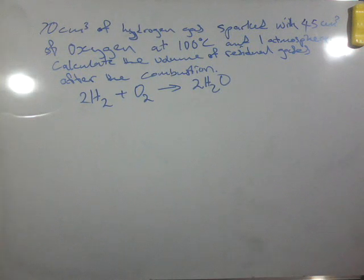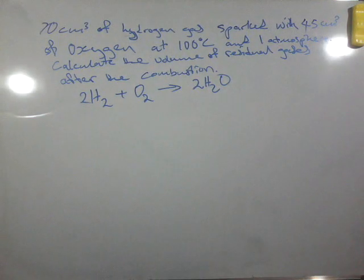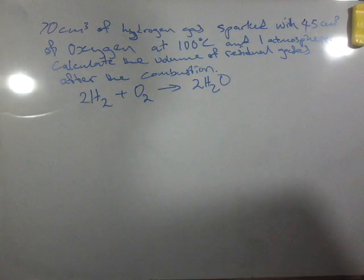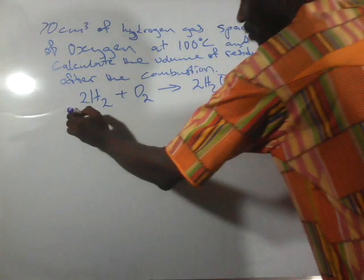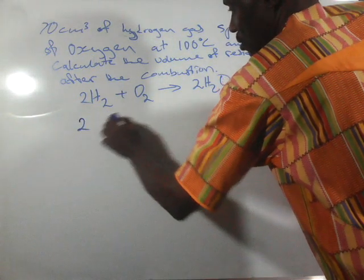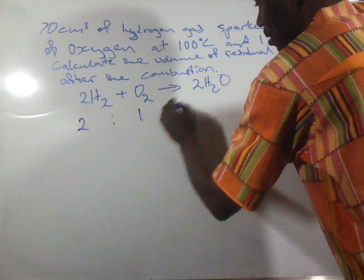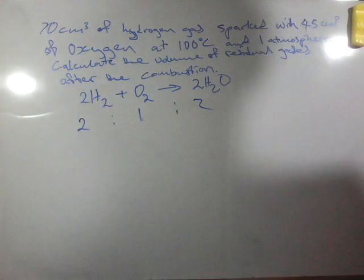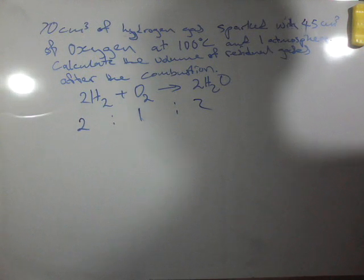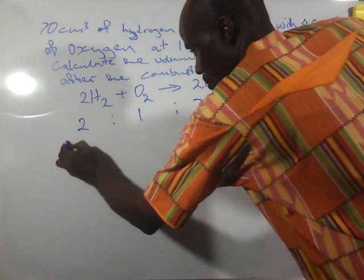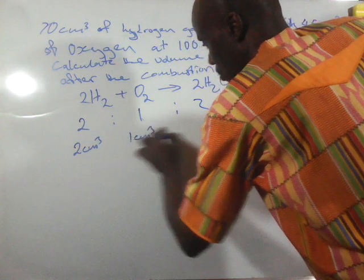Now what we need to look at is Gay-Lussac's law of combination of gases. He said that when gases react, the volumes are in a simple ratio. That means this is the ratio - the ratio here is 2:1:2. The equation is 2H₂ + O₂ → 2H₂O.